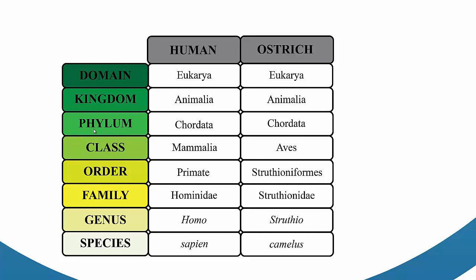Phylum is the next group underneath the kingdom, and there are about 37 to 39 phyla within the kingdom animalia. Both humans and ostriches qualify as chordates, which means we both have backbones. Within chordata there are a number of classes, including the mammals and the birds — and this is where we split up. We are the chordates with fur that produce milk, making us class mammalia, and ostriches lay eggs that can survive on land and have feathers, making them class aves.